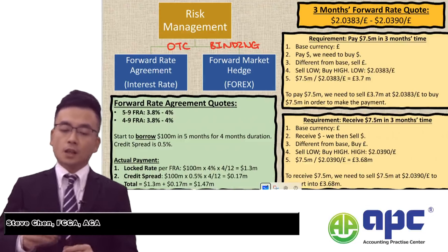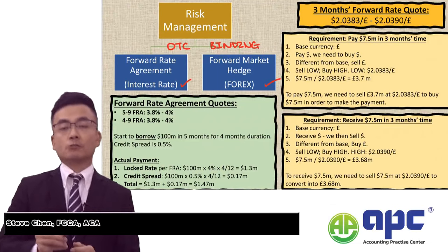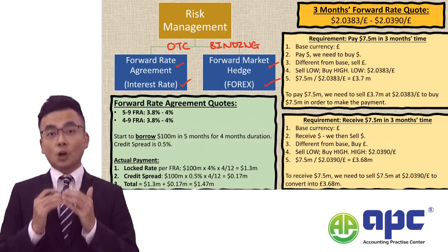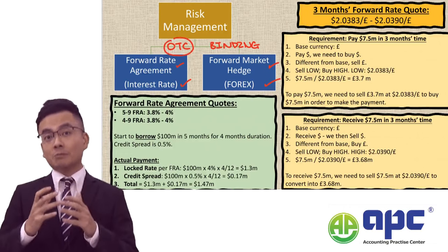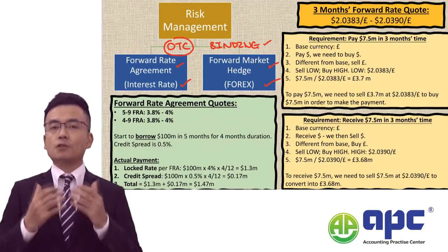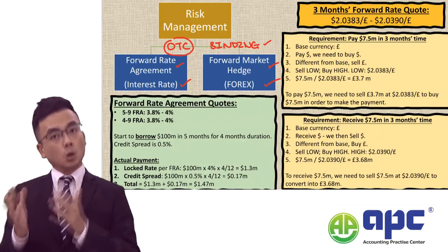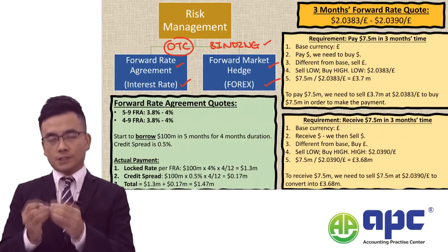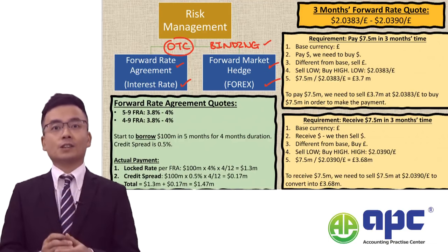Many students confuse the interest rate with the foreign currency by using the forward rate agreement, or the FRA contract, and the forward market hedge agreement. Because these contracts are over-the-counter contracts, which means dealing with a counterparty — usually with the bank — these contracts are binding. This means that if you agree a future interest rate to borrow or deposit money, or a future foreign exchange rate to receive or pay your foreign currency, you will have to exercise these contracts.